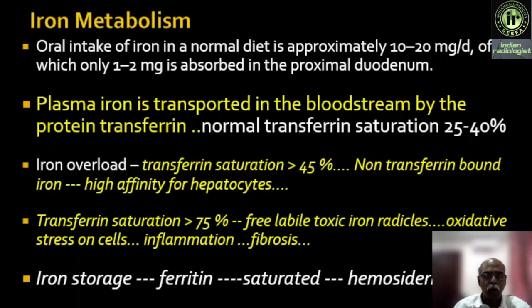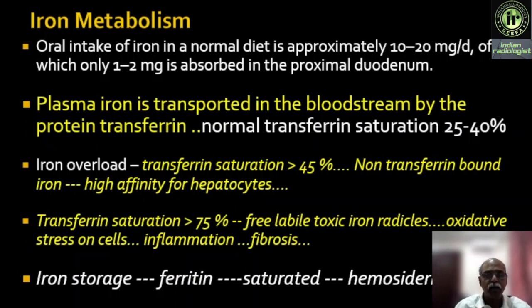The non-transferrin bound iron has to be stored somewhere, and the first storage organ is the liver. Non-transferrin bound iron has a high affinity for hepatocytes and goes and stays in the hepatocytes. If transferrin saturation becomes more than 75 percent, a special type of non-transferrin bound labile toxic iron radicals are released in the blood, which attack the hepatocytes faster. These are toxic radicals that lead to oxidative stress on the cells, repeated inflammation, and subsequently fibrosis. So, repeated iron overload status with more than 75 percent transferrin saturation leads to repeated inflammation, oxidative stress, and fibrosis.